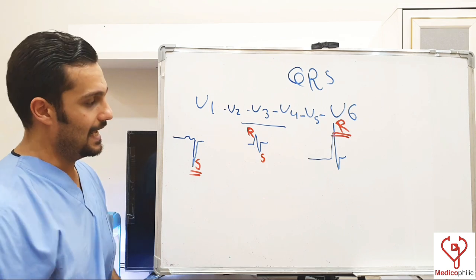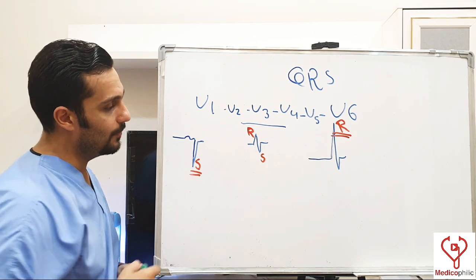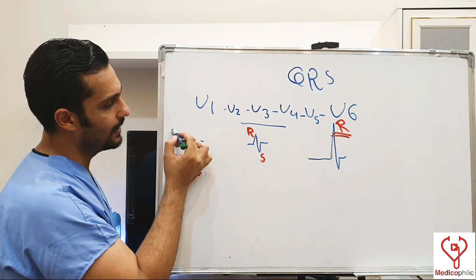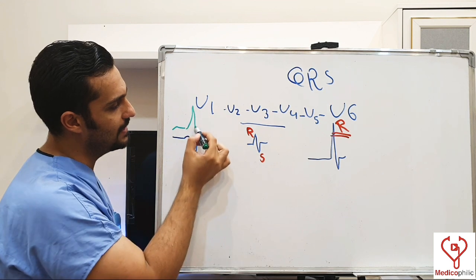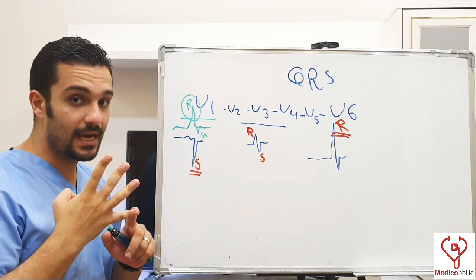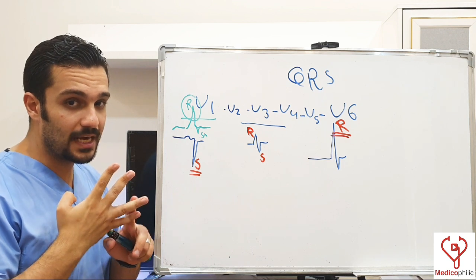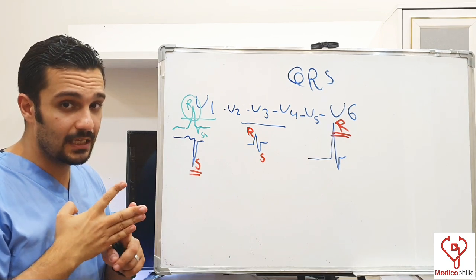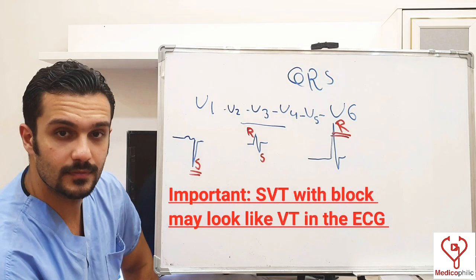From this important note: if we see a dominant positive R wave in V1, there is either one of the following — right bundle branch block, posterior MI, dextrocardia, or wrong lead connection. It is also important to remember that SVT with block may look like VT on the ECG. If you cannot distinguish between those two arrhythmias, manage as VT. A separate video will be made to distinguish between those two rhythms.